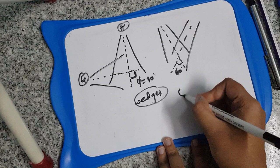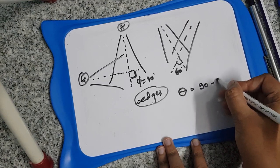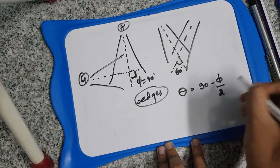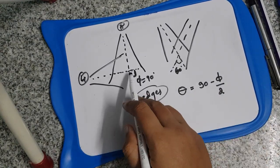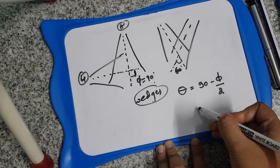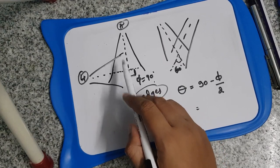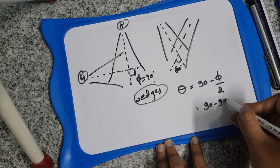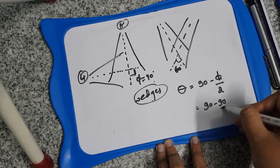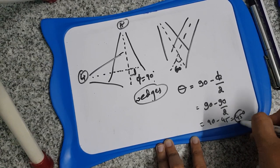The formula for this is: Wedge angle = 90 minus (hinge angle divided by 2). For example, if the hinge angle is 90 degrees, then it is 90 minus 90/2 = 90 minus 45 = 45 degrees. So you have to use a 45-degree wedge in this case.